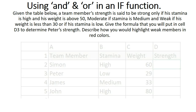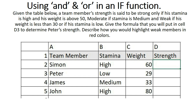So this is the story and that's the table. Given the table below, a team member's strength is said to be strong only if his stamina is high and his weight is above 50. Moderate if stamina is medium, and weak if his weight is less than 30 or if his stamina is low. Give the formula that you will put in cell D3 to determine Peter's strength. Describe how you would highlight weak members in red.